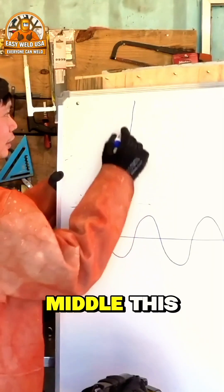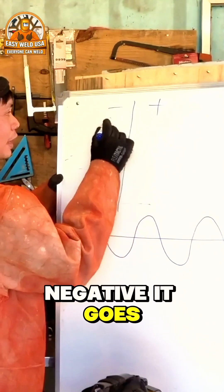For example, this one. This is the middle, this for example is the positive. This is the negative. It goes like this, right?